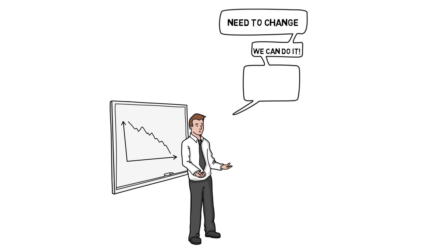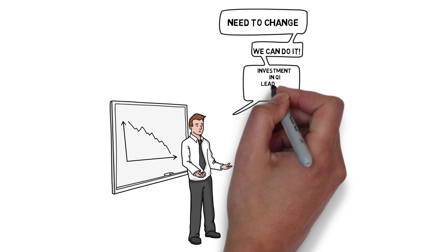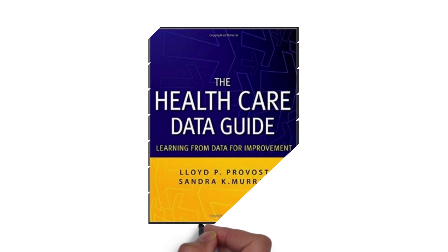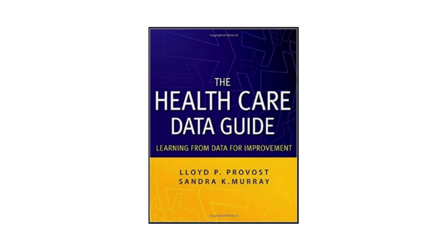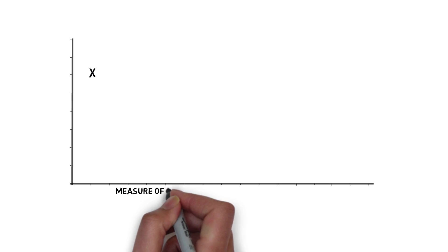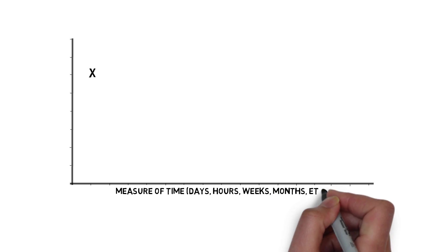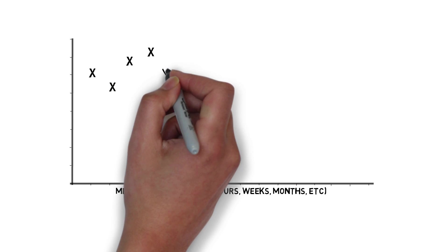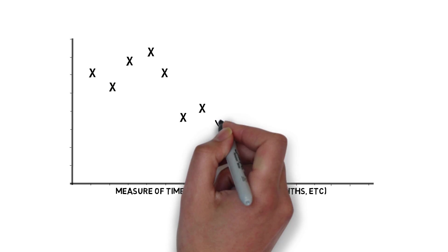A run chart can also clearly and succinctly tell a story of improvement, which can be very motivating and encouraging for teams. Run charts can also help leadership demonstrate how investing in QI has resulted in improved performance. The Healthcare Data Guide identifies seven steps to creating a run chart, and an appendix to this module details these steps. A run chart should be produced when data for the very first point is available. The practice of plotting data early facilitates learning from the data as soon as possible and sets an expectation that data will be plotted, reviewed, and analyzed on a continuous basis.